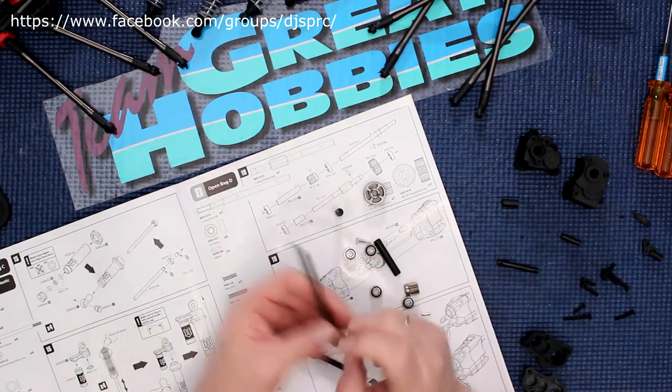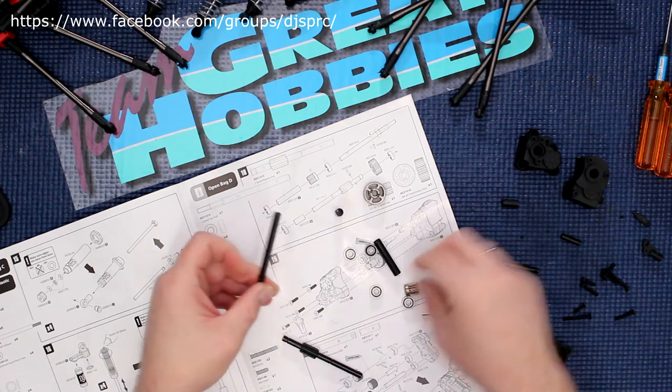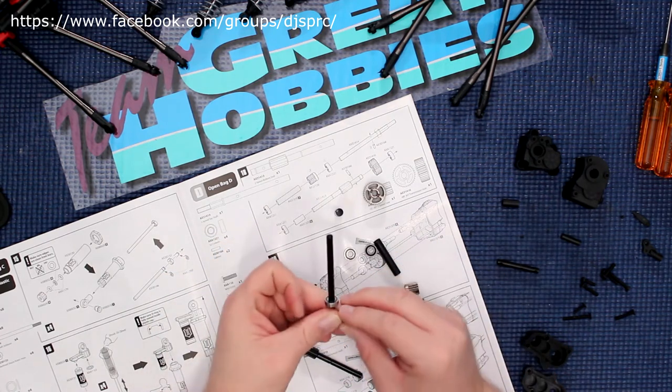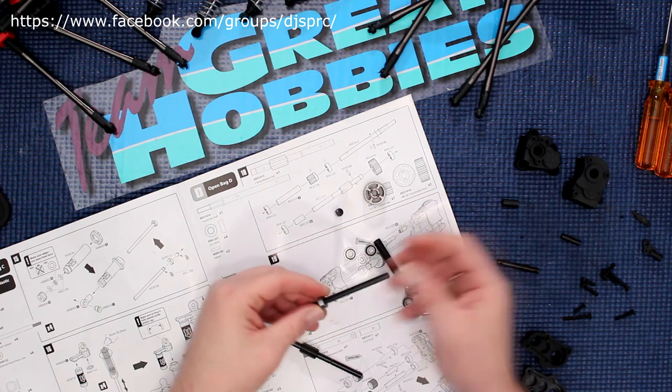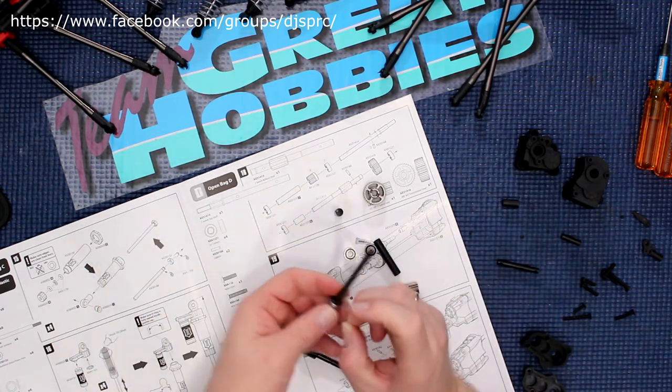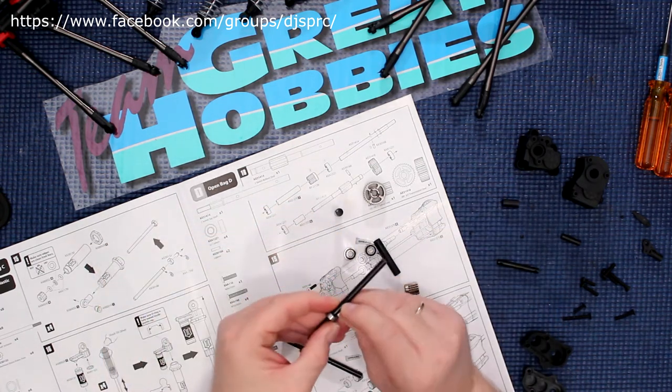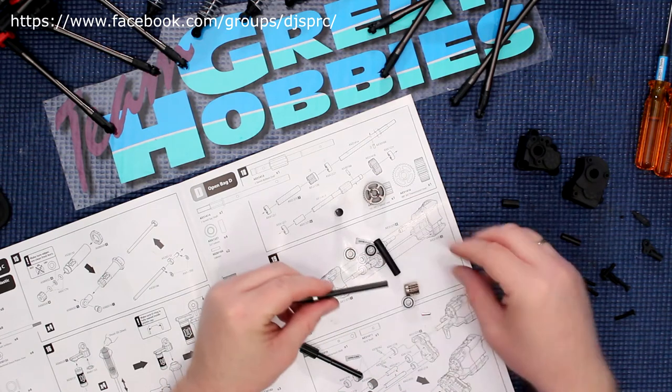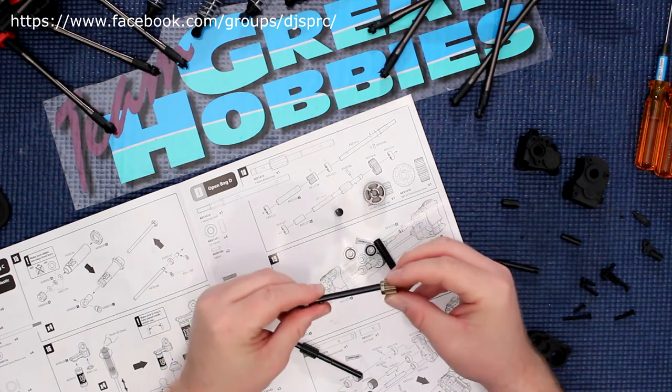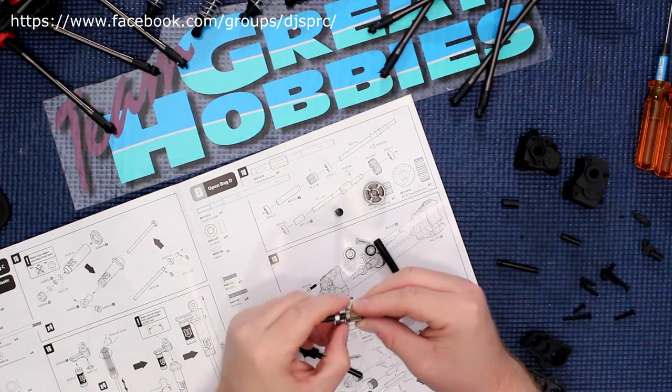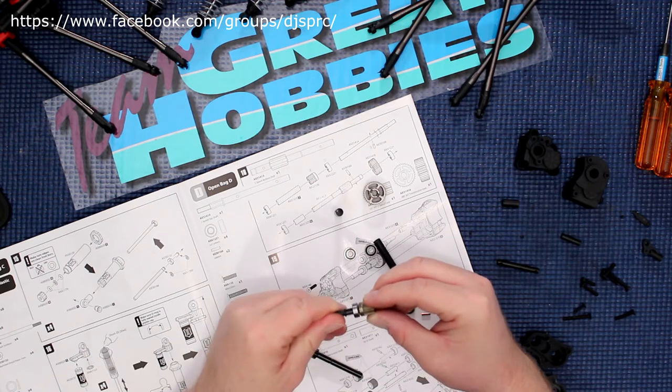Grab one of the pins. Before putting the pins, they want us to put a bearing, then our pin. That's super easy to fall off. Try to keep it straight. Grab this gear.